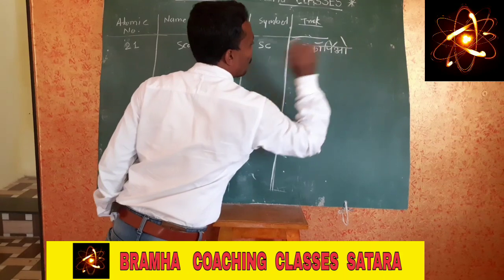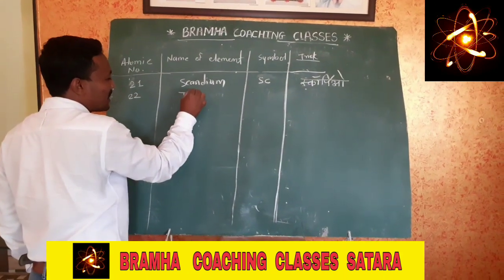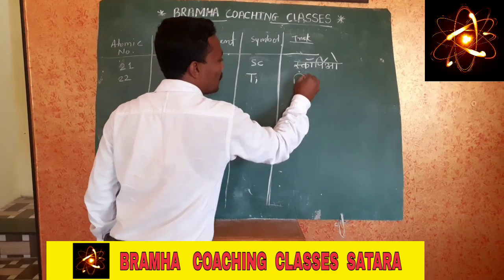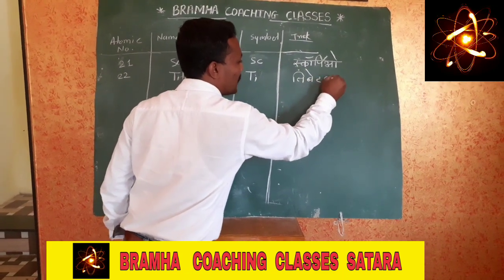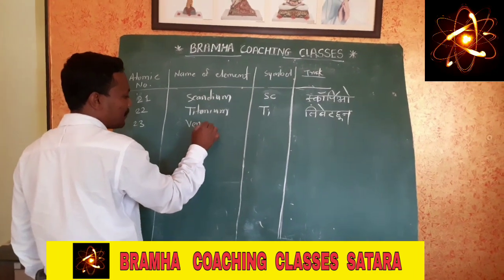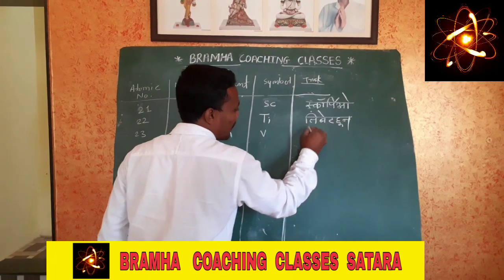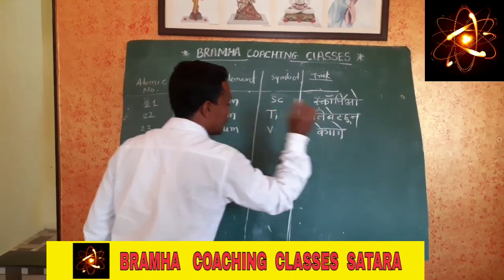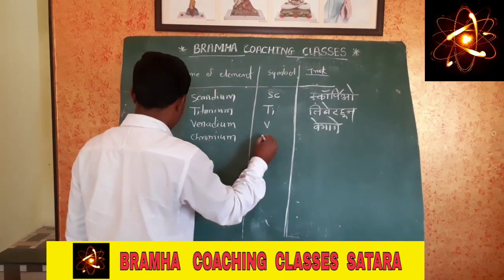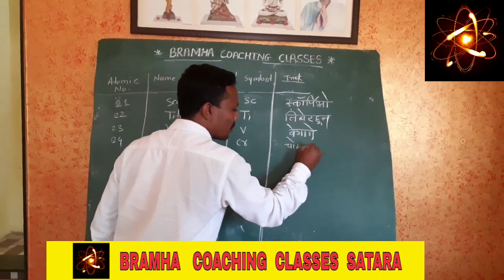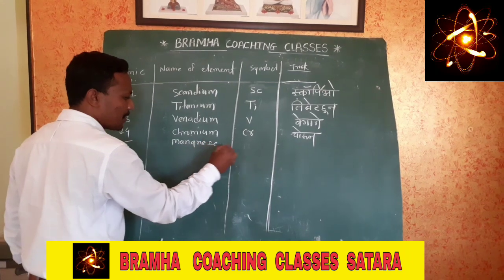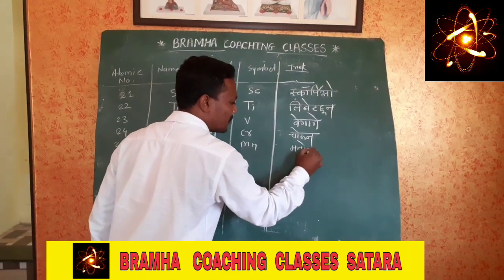Atomic number 21: Sc, Scandium — mnemonic 'Scorpio.' Atomic number 22: Ti, Titanium — mnemonic 'Tibet.' Atomic number 23: V, Vanadium — mnemonic 'Vedani.' Atomic number 24: Cr, Chromium — mnemonic 'Sorun.' Atomic number 25: Mn, Manganese — mnemonic 'Manoj.'